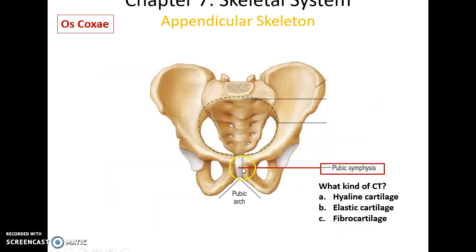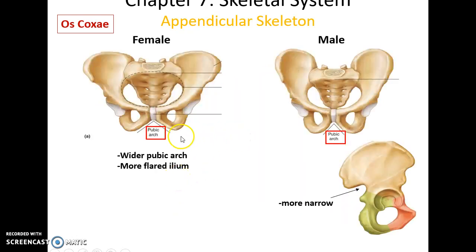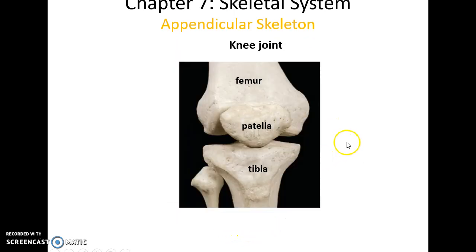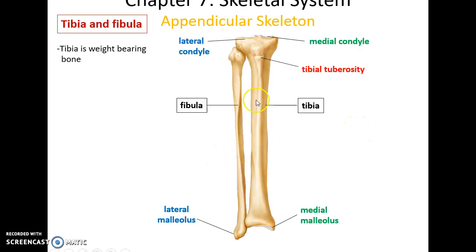The pubic symphysis is a piece of fibrocartilage that connects the two os coxae. Females have a larger, wider pubic arch than males, who have a more narrow curvature in that location. The femur has a head that fits into the acetabulum, a greater trochanter and lesser trochanter, and at the distal end a lateral condyle and a medial condyle. The patella is also part of the knee joint.